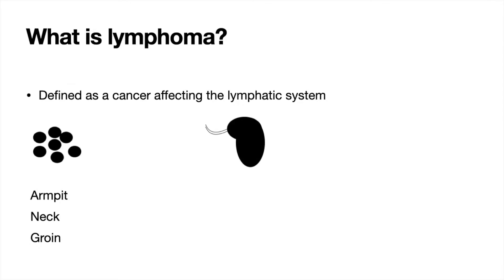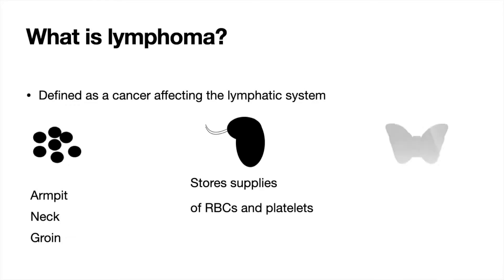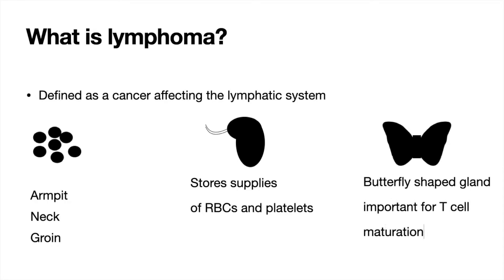These include the spleen, which is an important organ for the emergency supply of red blood cells and platelets and can be used by the body if, for example, the patient has severe bleeding. Additionally, another important organ to consider is the thymus, a butterfly-shaped gland important for the maturation of T cells.